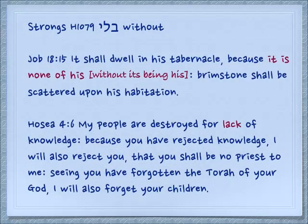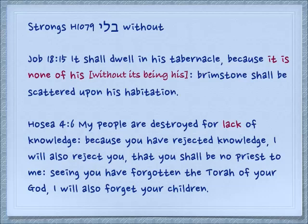Job 18:15: 'It shall dwell in his tabernacle because it is none of his' — in other words, without it belonging to him — 'brimstone shall be scattered upon his habitation.' Hosea 4:6: 'My people are destroyed for lack of knowledge' — without knowledge — 'Because you have rejected knowledge, I will also reject you, that you shall be no priest to me, seeing you have forgotten the Torah of your God, and I will also forget your children.'